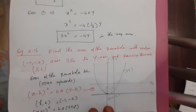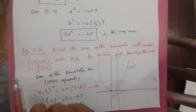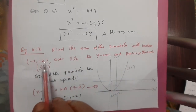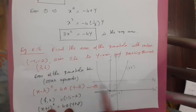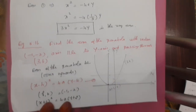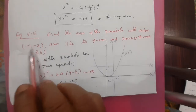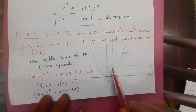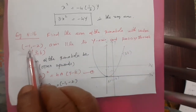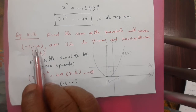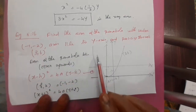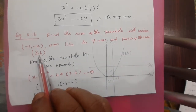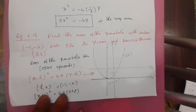Next, a slightly different type: Example 5.16. Find the equation of the parabola with vertex at minus 1 comma minus 2 — apart from the origin, very important. The axis is parallel to the y-axis, and it passes through the point 3 comma 6. The vertex is given as minus 1 comma minus 2, so the parabola does not pass through the origin. Draw the x-axis and y-axis, then plot the vertex at minus 1 comma minus 2.